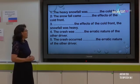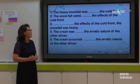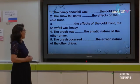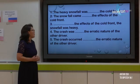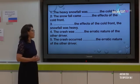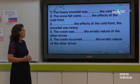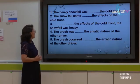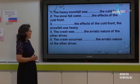Number four — pay attention to this sentence carefully, it is similar to number one. 'The crash was _____ the erratic nature of the other driver.' The verb 'was' as a to-be verb in past form is always followed by an adjective, and that's why the adjective clause uses 'due to'. The correct sentence is: 'The crash was due to the erratic nature of the other driver.'